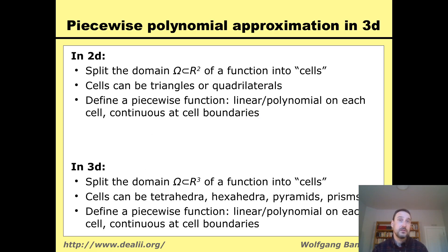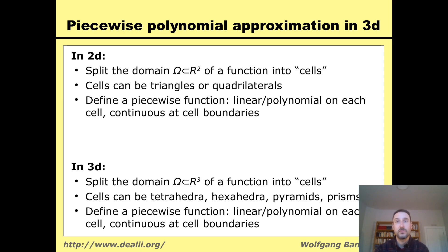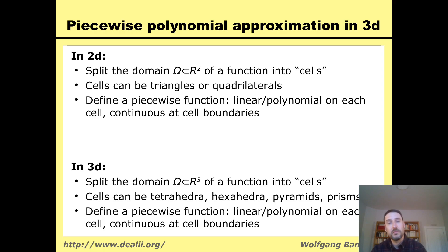So in 2D, I split the domain into a set of cells. On each cell — a triangle or quadrilateral — I define a piecewise function, for example linear, or a higher order polynomial. In 3D, I do fundamentally the same thing. I take my domain, which is now a subset of R3, and split it into cells. These cells can be tetrahedra, hexahedra, pyramids, or prisms.